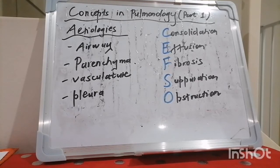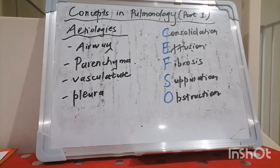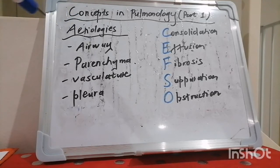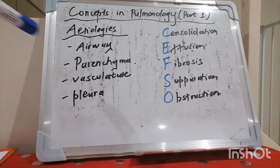So from a purely anatomical perspective, a conceptual framework for pulmonology: you can think of pathology as affecting the lungs in terms of whether it affects the airway, the parenchyma, the vasculature, or the pleura.